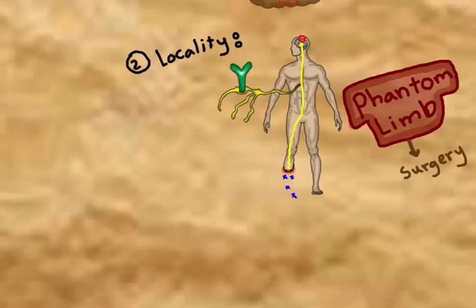Through a process called neuroplasticity, which we'll discuss later in this video, everything returns to normal. Phantom limb is a false interpretation from the sensory cortex that doesn't last long and gets fixed in no time.